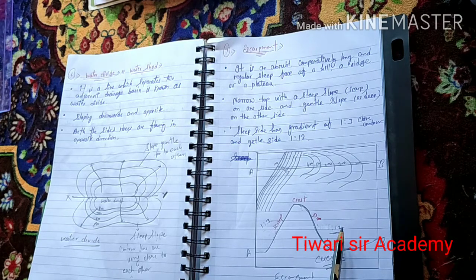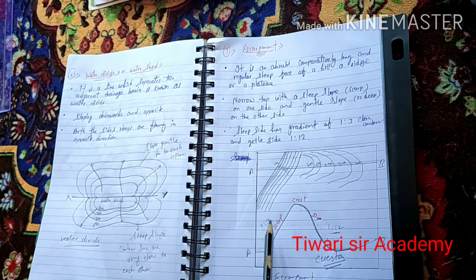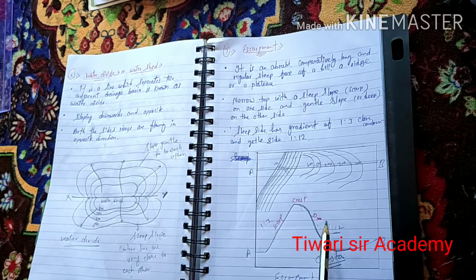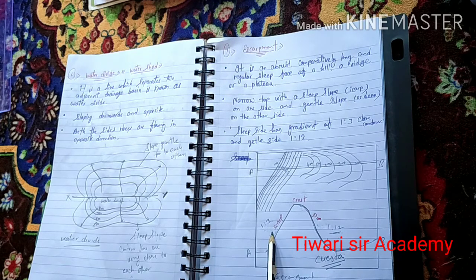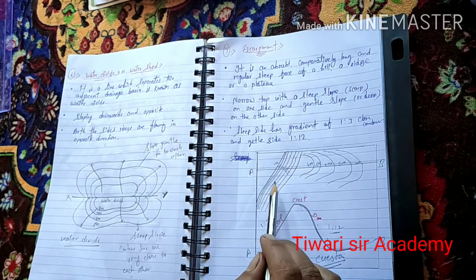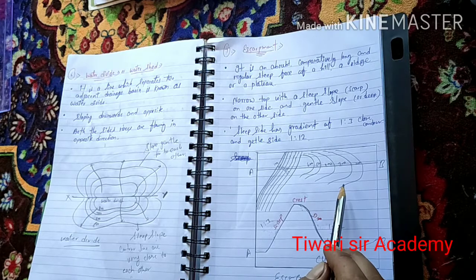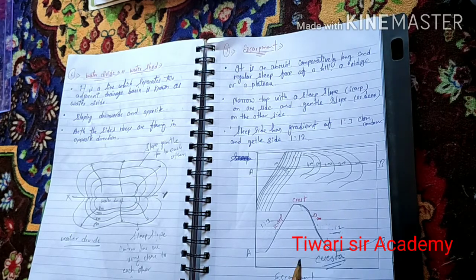The steep scarpe is the front side and the deep is the back side. Such a landform is called a cuesta. The contour lines are very close to each other on the scarpe side and far apart from each other on the deep side. This type of landform is called the cuesta.